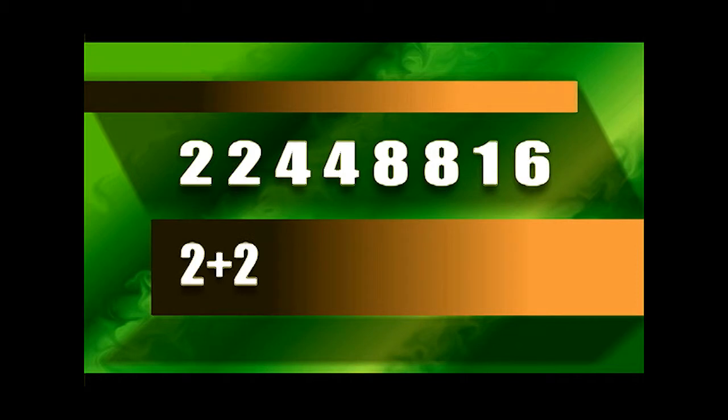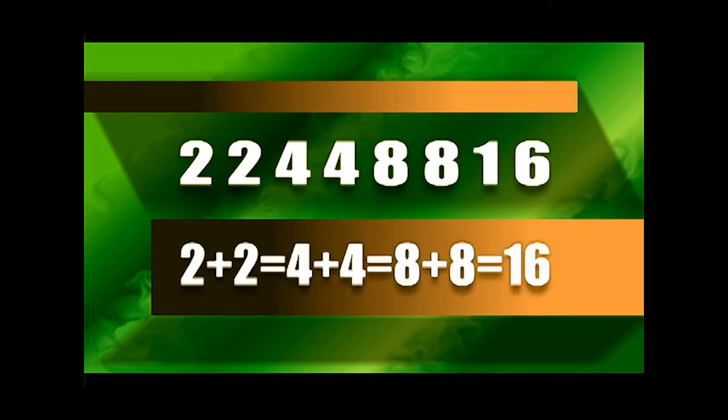Por último, além de condensarmos as informações dos números e de procurarmos uma associação, podemos buscar um padrão nos números. Exemplos: os números 22, 44, 88, 16. Devemos memorizar 22, 44, 88, 16. E ainda podemos encontrar um padrão numérico na relação de somas desses números: 2 mais 2 igual a 4, mais 4 igual a 8, mais 8 igual a 16.